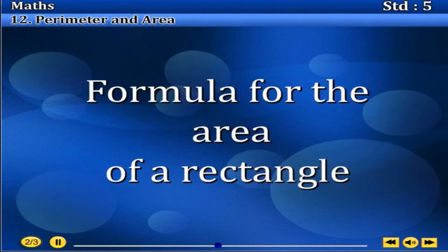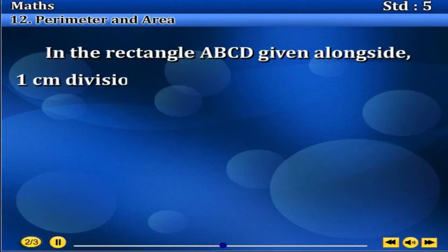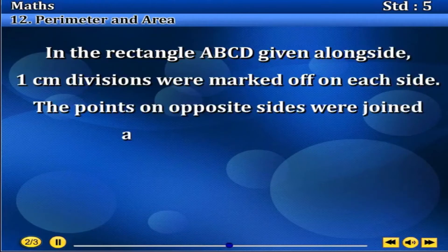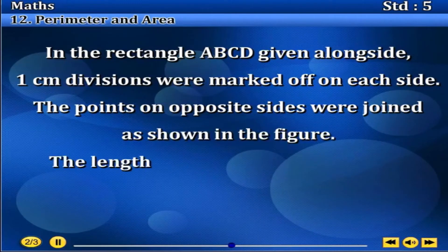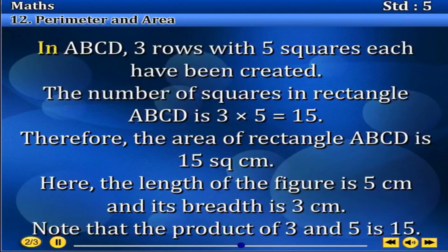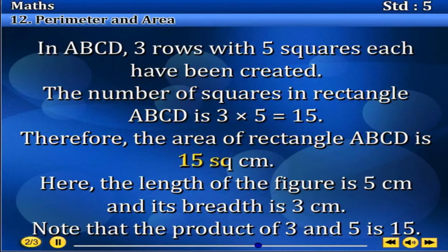Formula for the area of a rectangle. In the rectangle ABCD given alongside, 1 cm divisions were marked off on each side. The points on opposite sides were joined as shown in the figure. The length of the sides of each square thus created is 1 cm. Therefore, the area of each square is 1 cm². In ABCD, 3 rows with 5 squares each have been created. The number of squares in rectangle ABCD is 3 into 5, equals 15. Therefore, the area of rectangle ABCD is 15 square cm.